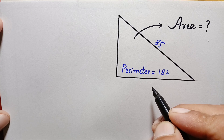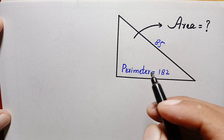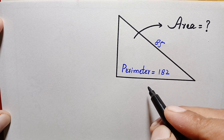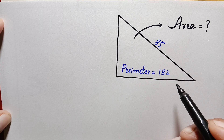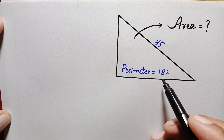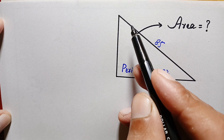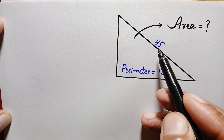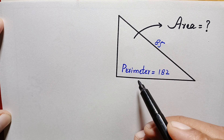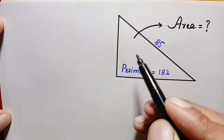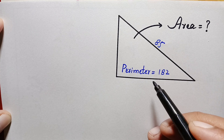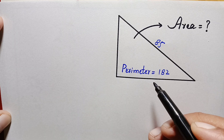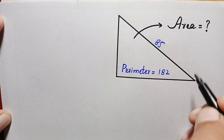Hello everyone, you are welcome. Today we have a very interesting geometry math problem. We have a right angle triangle whose perimeter is 182 units and its hypotenuse is 85 units. Our job is to find out the area of this right angle triangle.